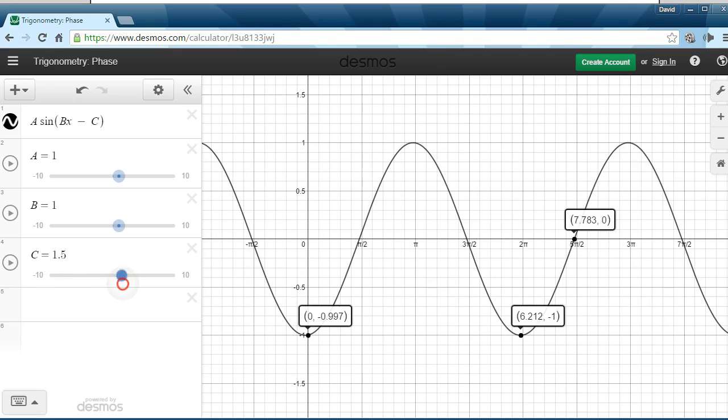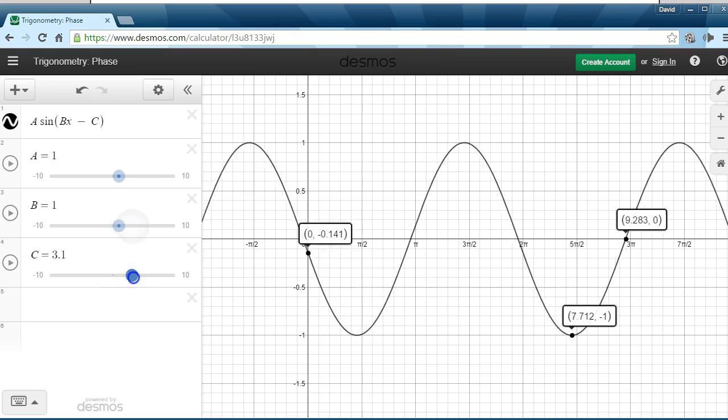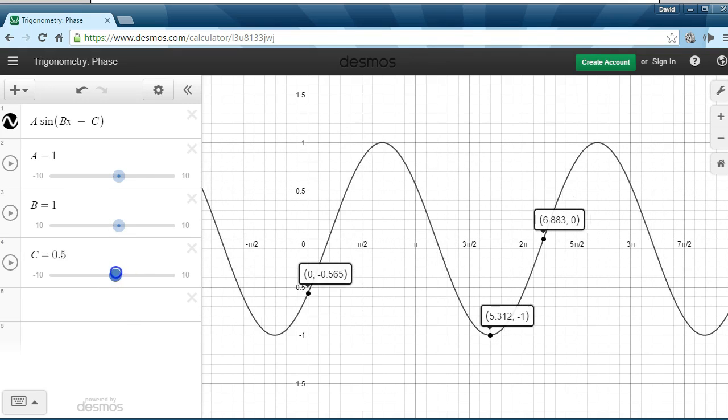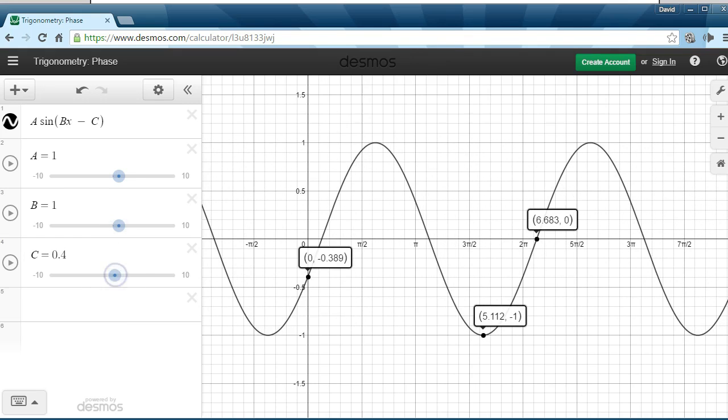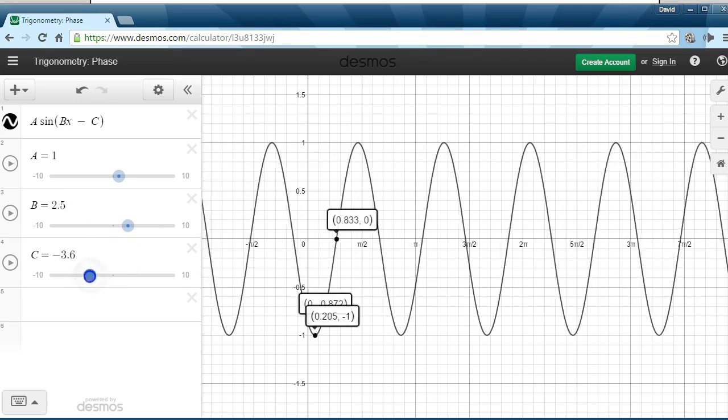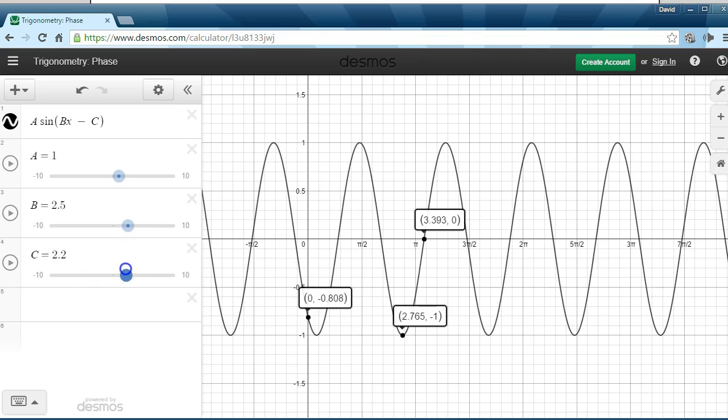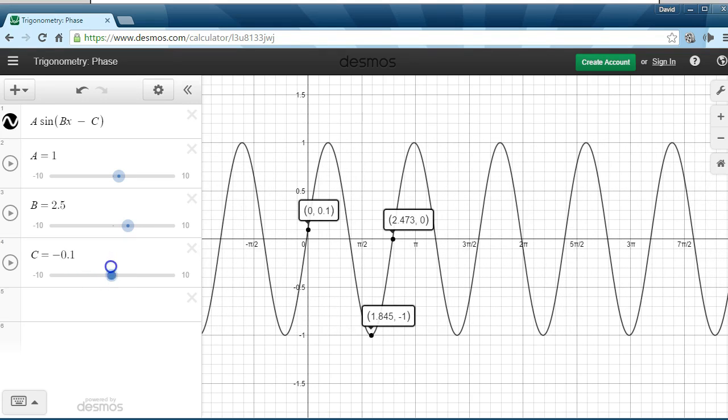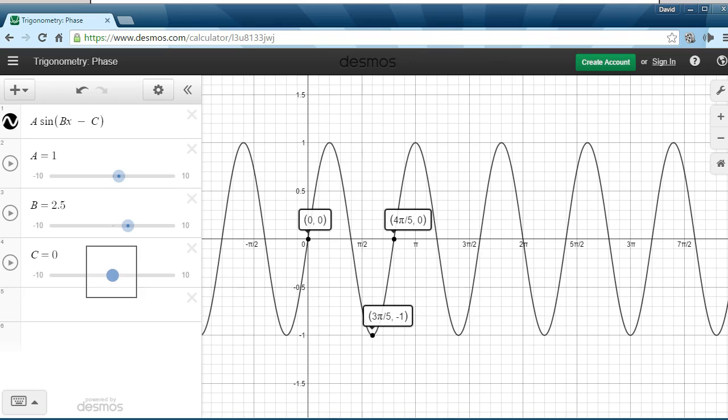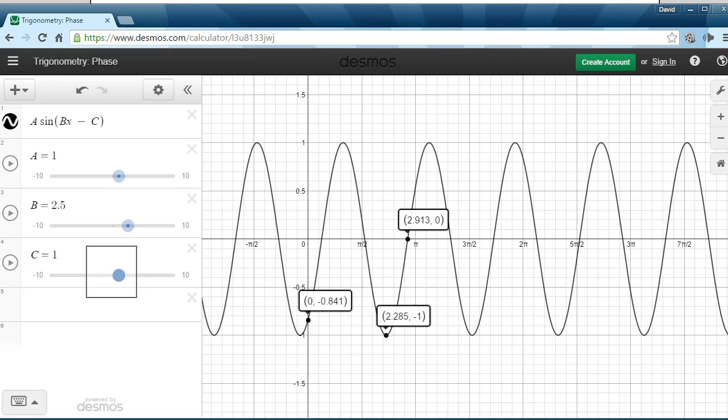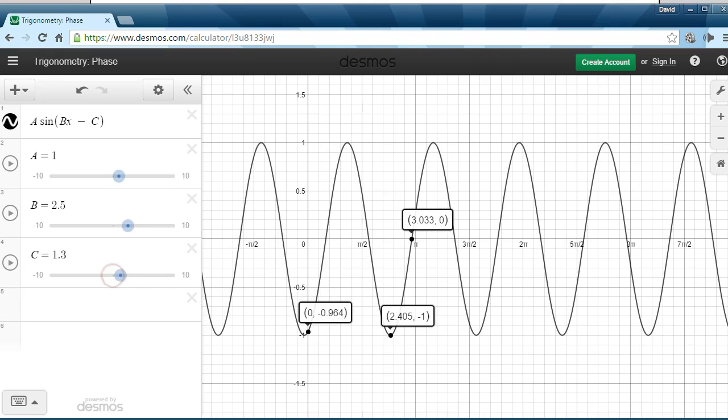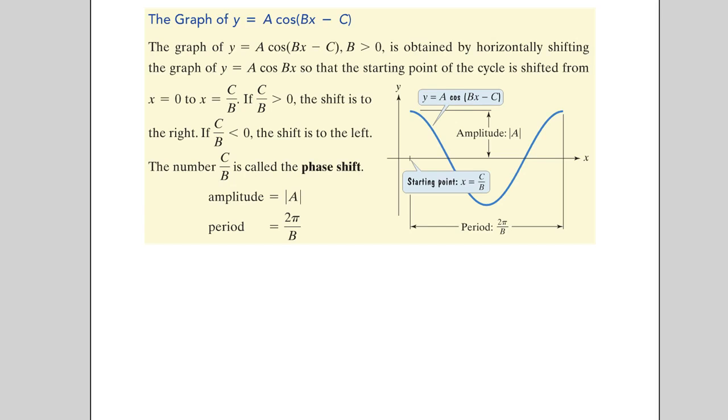So C is called the phase shift. C and B, when they work together, we get a combination. If B is different than 1, then C and B together are what we call, what we refer to as the phase shift. And that's just moving the starting point off the midline. So instead of it being at the origin, like we're used to when C is 0, our starting value gets moved a little bit to the left or to the right.